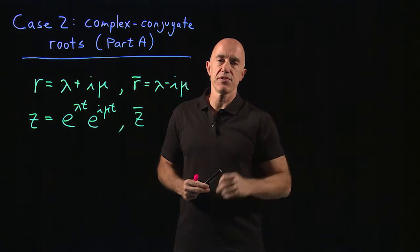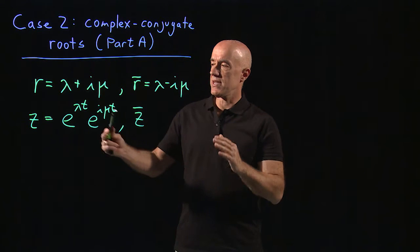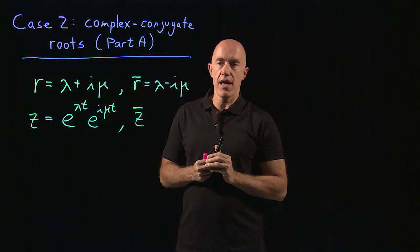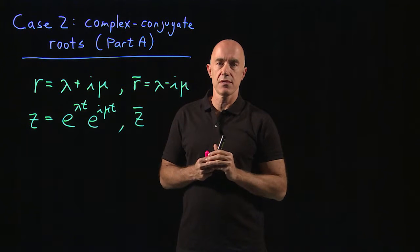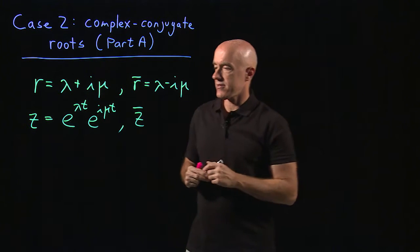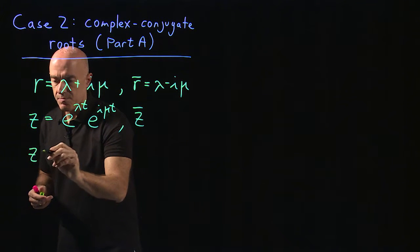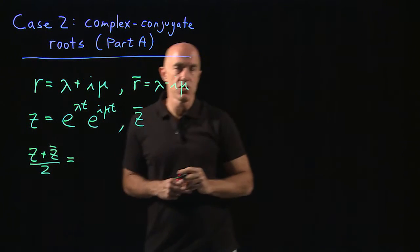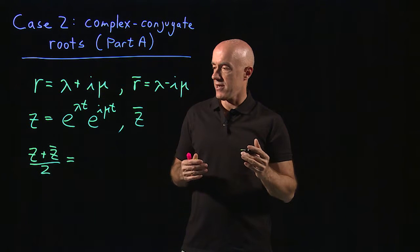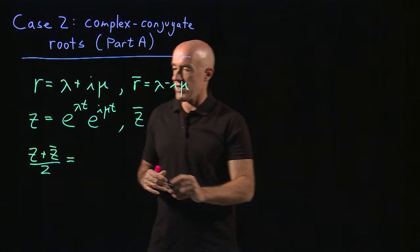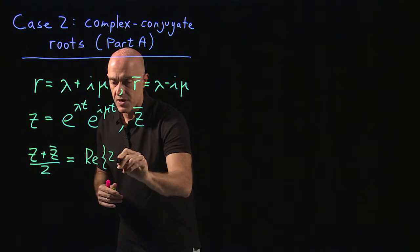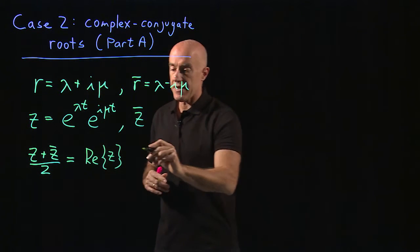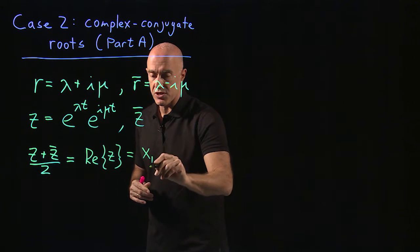The key is to use the principle of superposition. Using z and z-bar, can we add them together in such a way that we end up with two real solutions? The answer is yes. If we look at z plus z-bar divided by two, you'll know from complex numbers that this is just the real part of z. And that is what we're going to call x1, our real function x1.